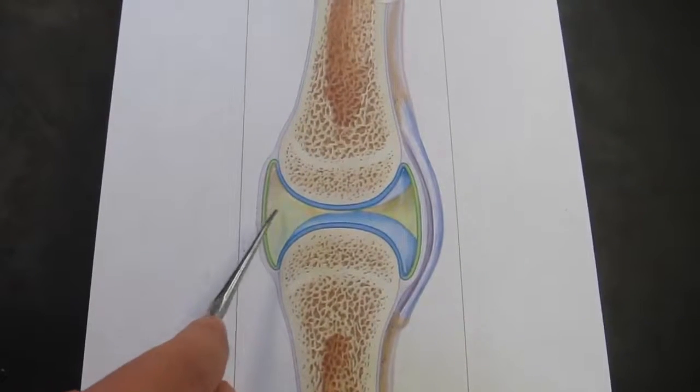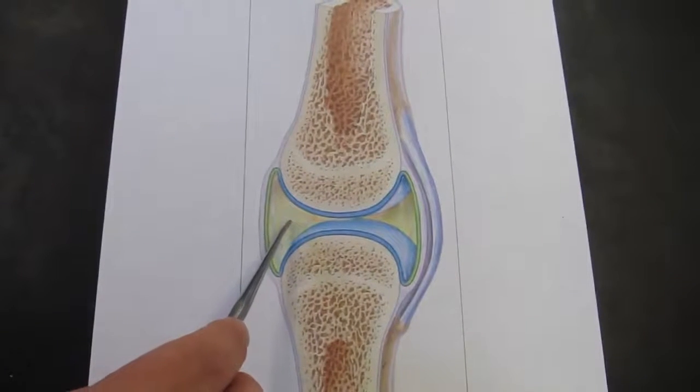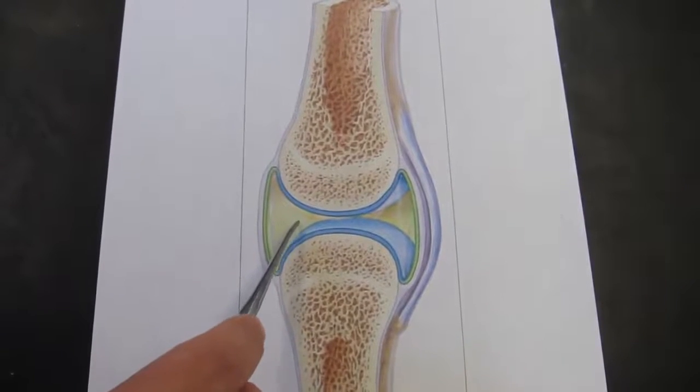And there will also be, since this is a filtrate of the blood, there's also a little bit of oxygen and some glucose in this fluid.